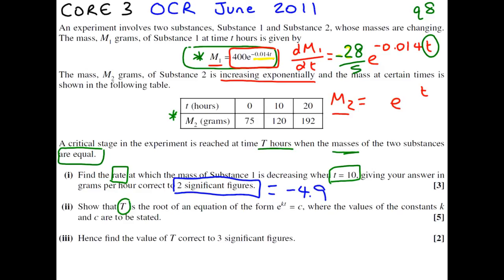We're forgetting that we could have something multiplied in front of the e, and we could have something multiplied in front of t. We need to put those constants in just in case they're not 1, which they probably won't be.